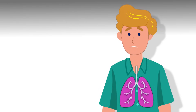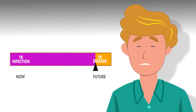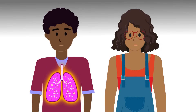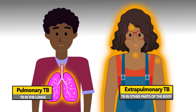Someone who has become infected may develop TB disease in their lungs or in other parts of their body, either soon after infection or years in the future. Most of the time, TB affects the lungs, but it can affect any part of the body. Disease in the lungs is called pulmonary TB. Disease in other parts of the body is called extra-pulmonary TB. TB of the lungs is the type that is most likely to spread from person to person.